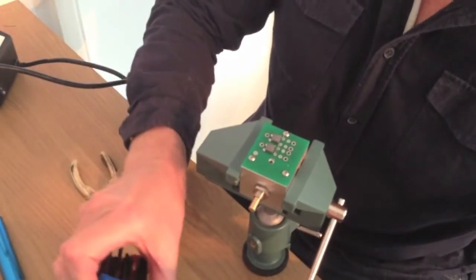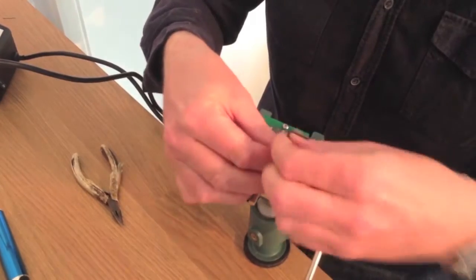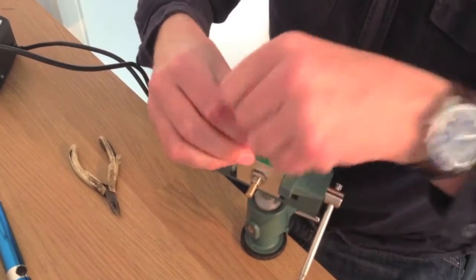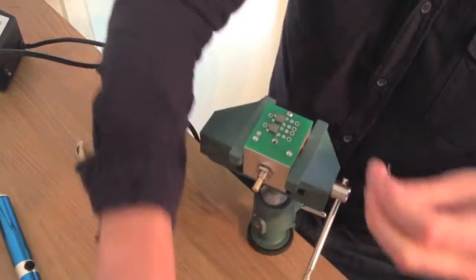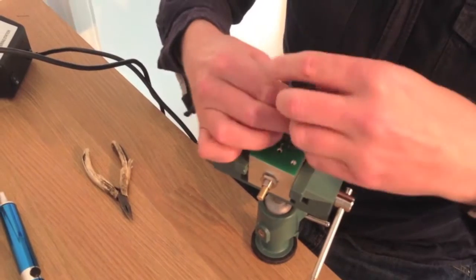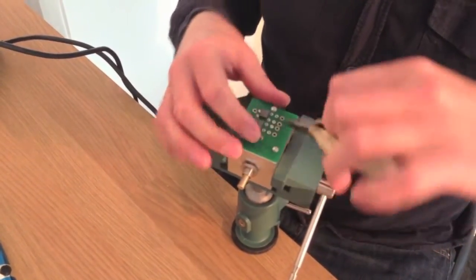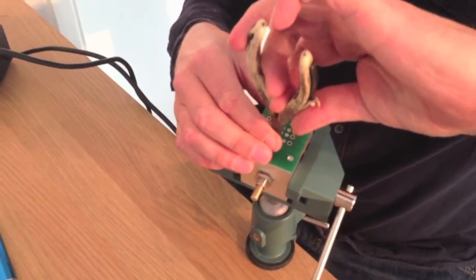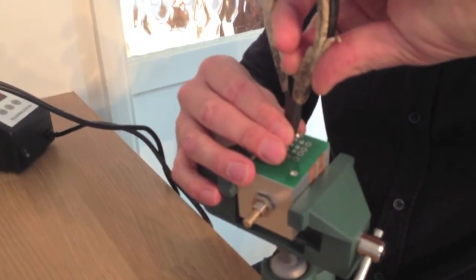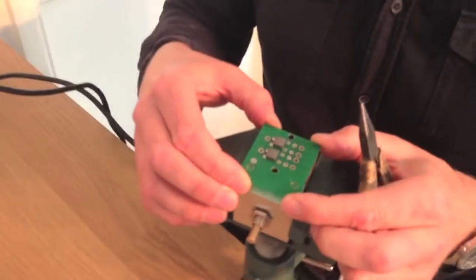That's fine. You need a number two Allen key because you need to undo the screws. I'll just go around and do those. Now, just try and straighten out these wires as you lift it off, it just makes it easier. It should just lift off quite nicely.